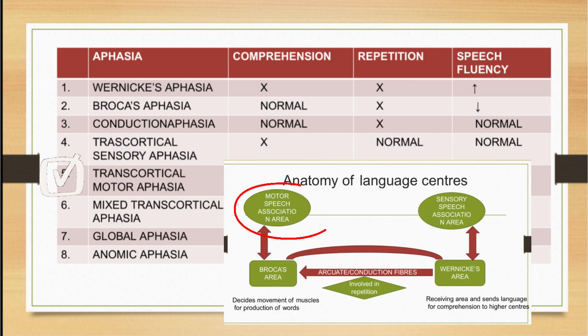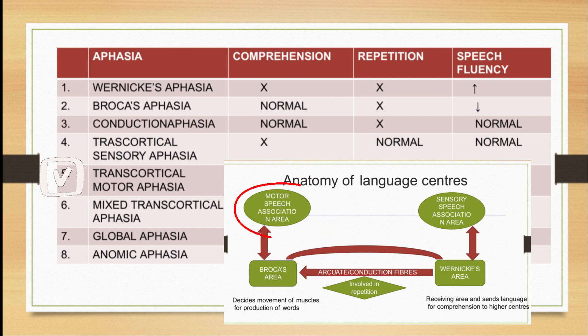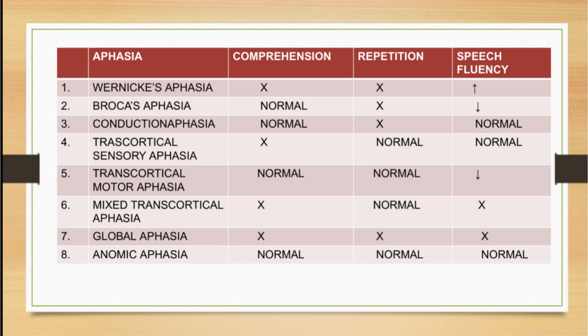In transcortical motor aphasia, when the motor association areas are impaired, there will be normal comprehension, normal repetition, but speech fluency will be reduced. In mixed transcortical aphasia, when both motor and sensory association areas are involved, comprehension as well as speech fluency will be lost, but repetition remains normal because Broca's, Wernicke's and arcuate fibers are intact.